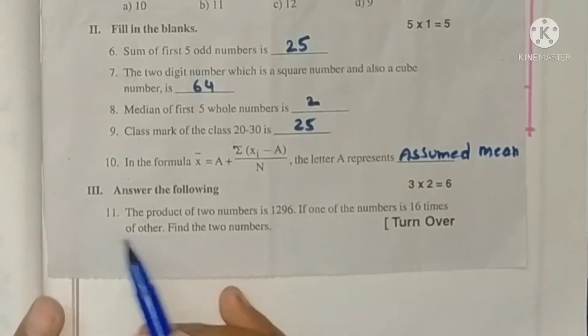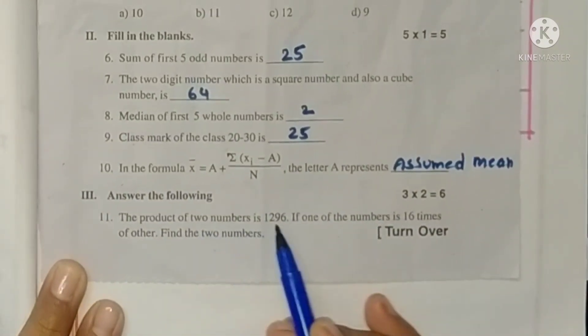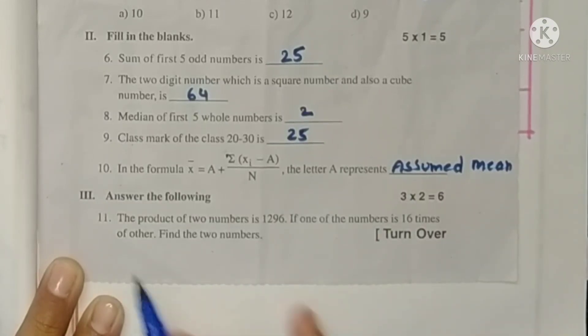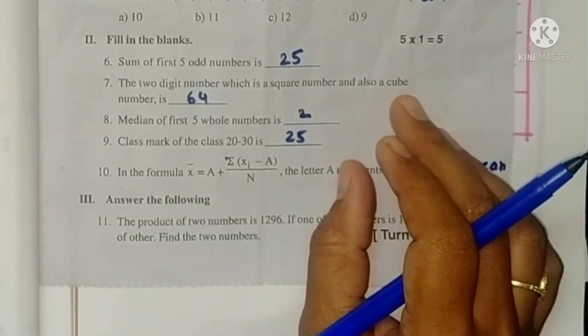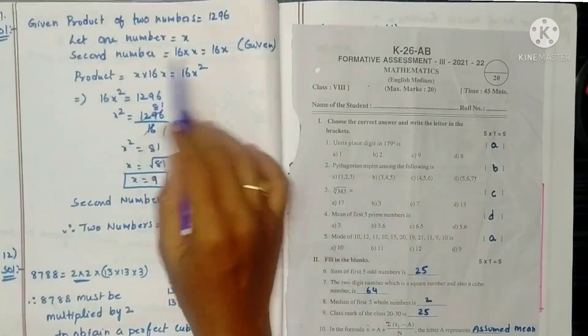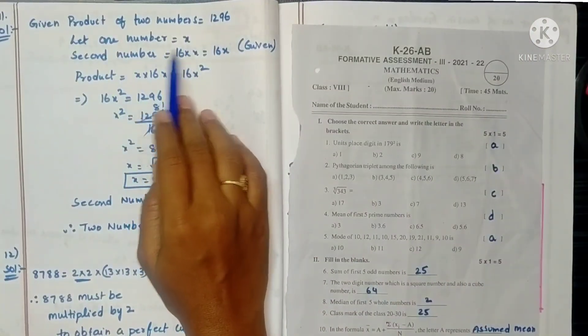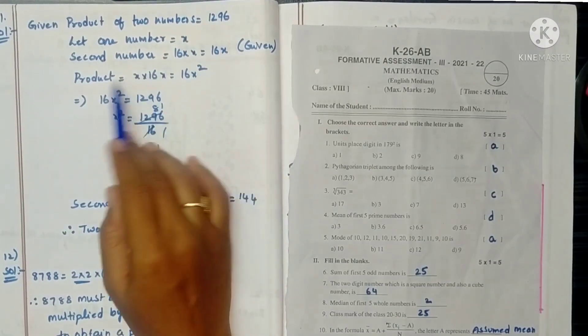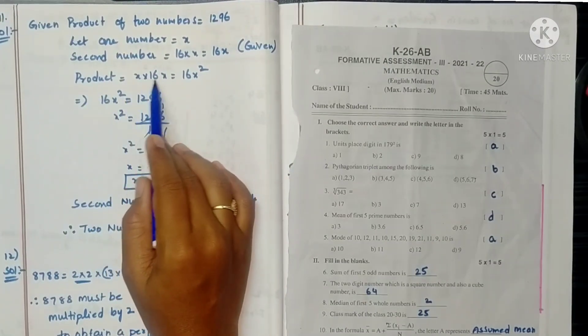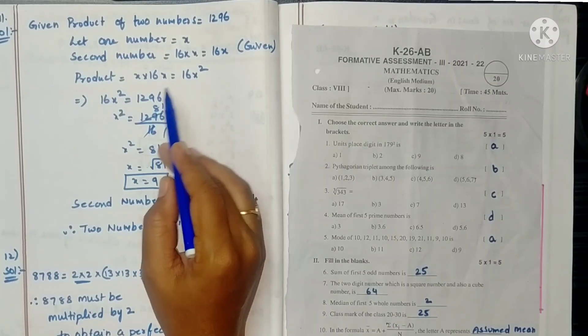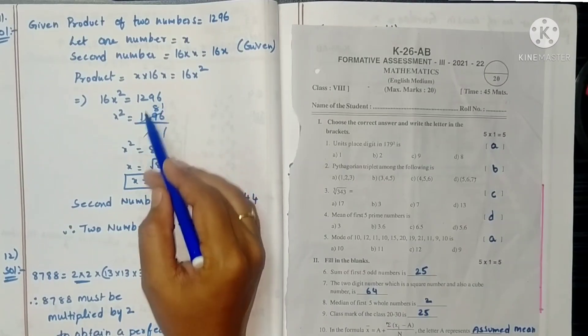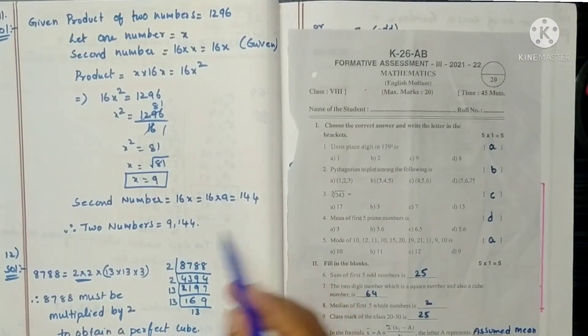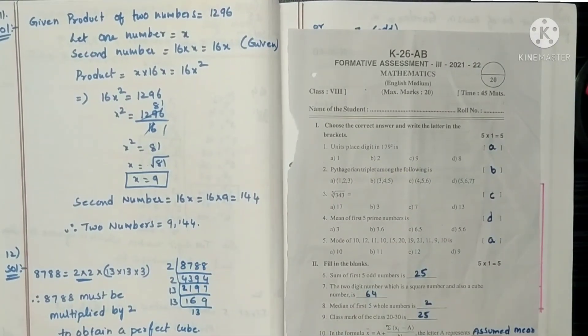Next, two marks questions. Roman 3, 11th one. The product of two numbers is 1296. If one number is 16 times of other, find the two numbers. Let one number be X and second number 16 times X. Product is X into 16X equals 16X square equals 1296. After simplifying we get X as 9. So 16 into 9 is 144. These are the two numbers.